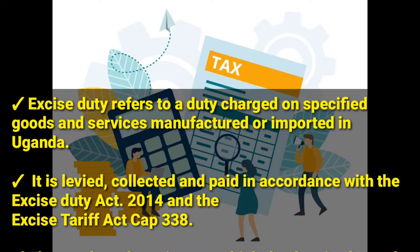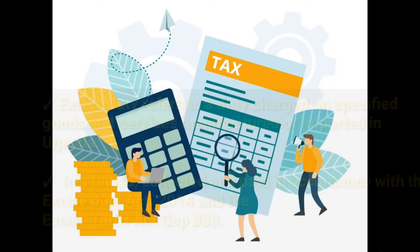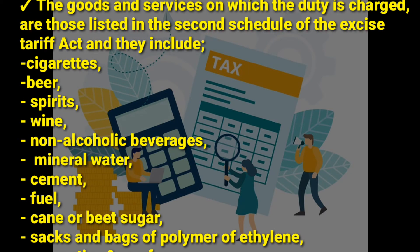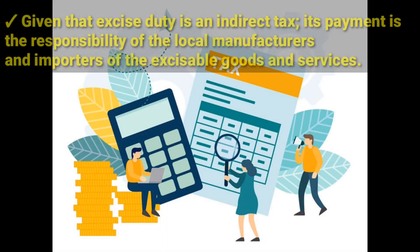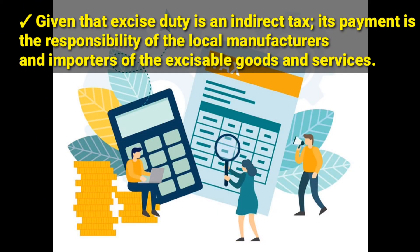Cap 338. The goods and services on which excise duty is charged are those listed in the Second Schedule of the Excise Tariff Act, and they include things like cigarettes, beer, spirits, wine, non-alcoholic beverages, mineral water, cement, fuel, and other things. Excise duty is an indirect tax, and since it's an indirect tax, its payment is the responsibility of